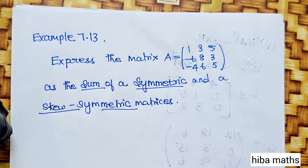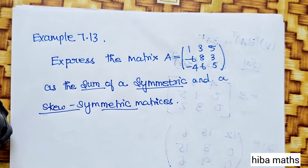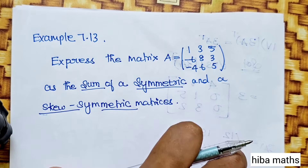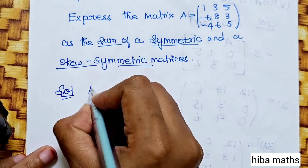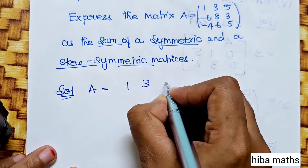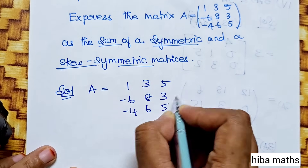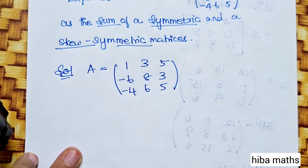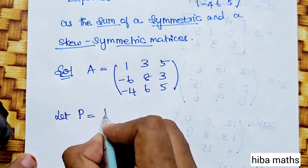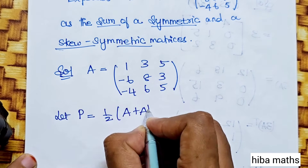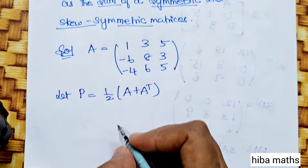To express matrix A as a sum, we use the formula: let P equal to half of A plus A transpose. This is the symmetric matrix formula. We can apply this formula.